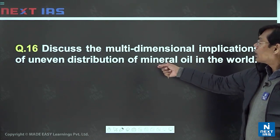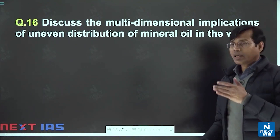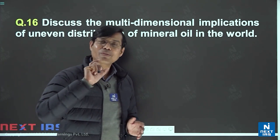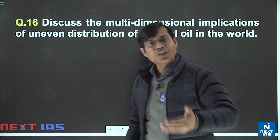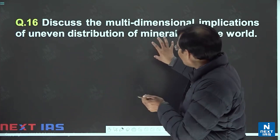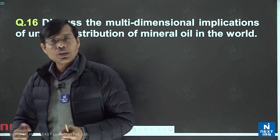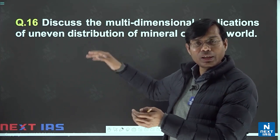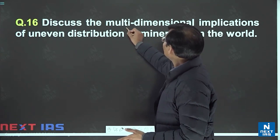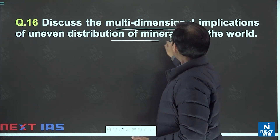The question asks us to discuss the multidimensional implications of the uneven distribution of mineral oil in the world. This is a very important and beautiful question indicating that UPSC is examining you on a variety of thinking: are you able to present, club several points, take an interdisciplinary approach, and link historical, political, economic, and social — multi-dimensional aspects?